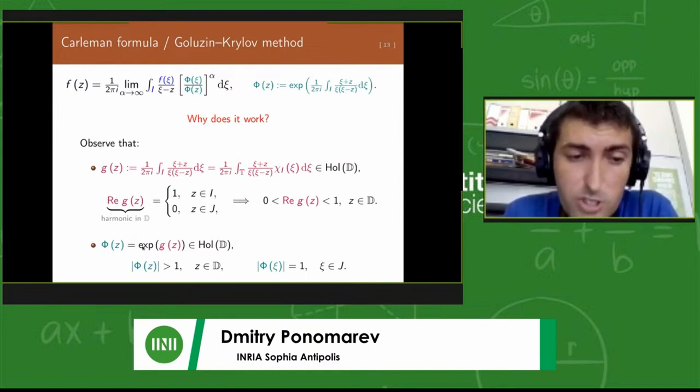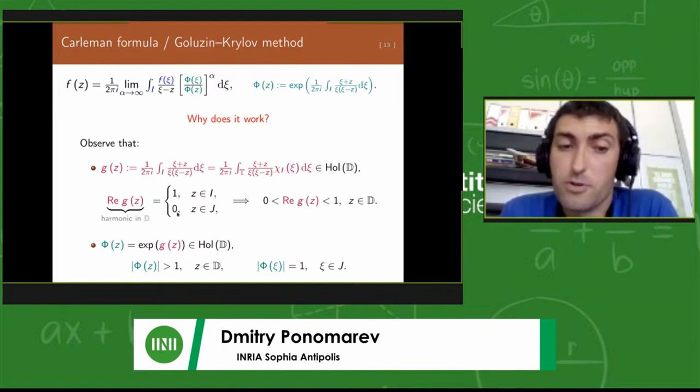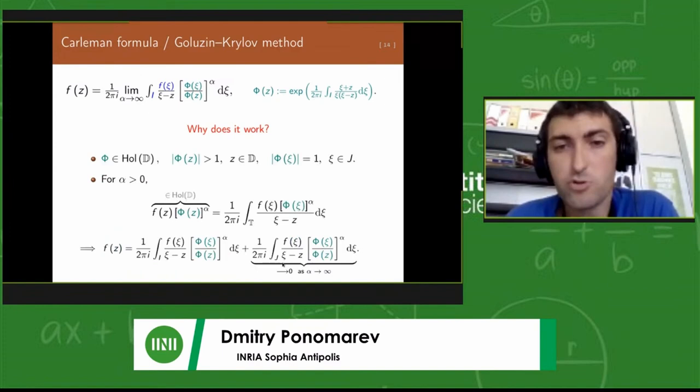It's one on i and zero on j, and as the real part of a holomorphic function is harmonic in d, it satisfies the minimum maximum principle. In particular, the real part of g would be bigger than zero. This is important. Since g is holomorphic, phi, which is the exponential of g, will also be holomorphic inside the disk.